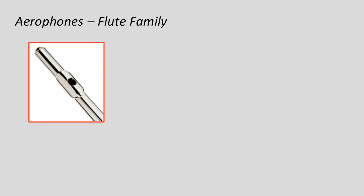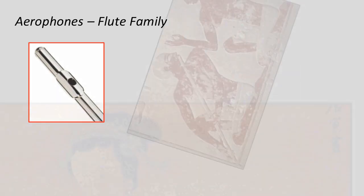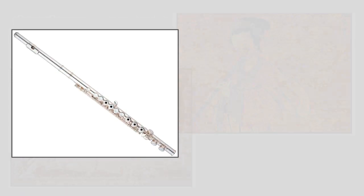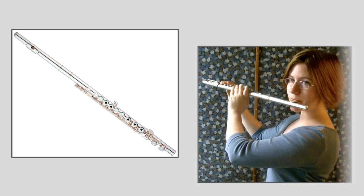The flute is the earliest known instrument. You can find evidence of flutes in the art of many different cultures. The modern flute that we see in today's orchestras is known as the transverse flute, which just means that you blow into it from the side. Let's listen to a sample of the flute to see what it sounds like.